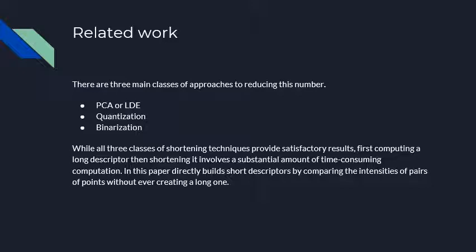For example, the DC descriptor is a combination of PCA and quantization to reduce its size to 60 bits. Third, using locality sensitive hashing we could turn floating point vectors into binary strings. But in each of these three methods, first we need to compute the larger descriptor, which involves a substantial amount of time-consuming computation. In this paper, BRIEF will build short descriptors directly by comparing intensities of pixel pairs.